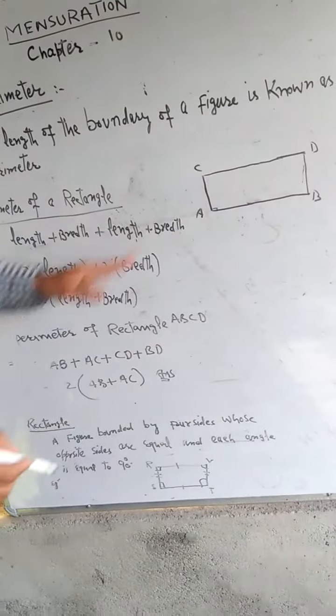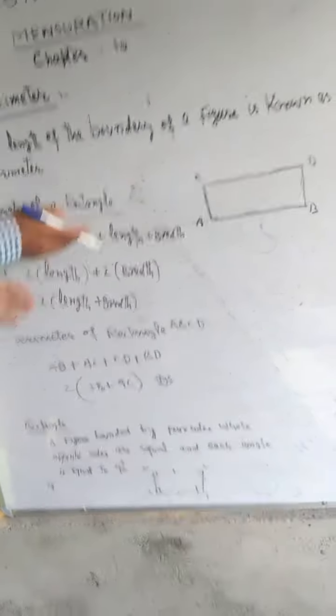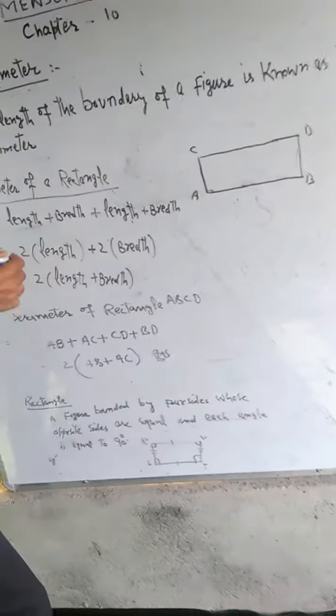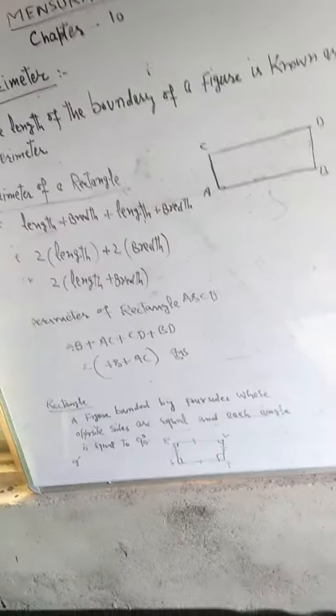If you see all sides together, this is called perimeter. This equals two times length plus breadth.